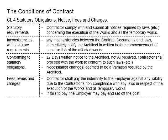If the architect does not provide any response within seven days, the contractor may proceed with the work to conform to the law. This work is considered valid, and whichever costs relate to that relevant work will be considered as variations, and the contractor is entitled to claim for the work being done.